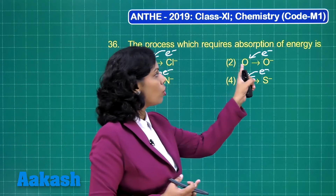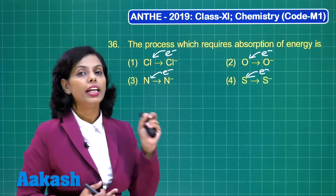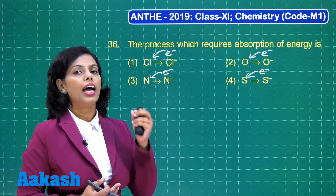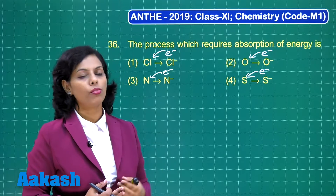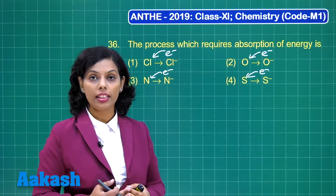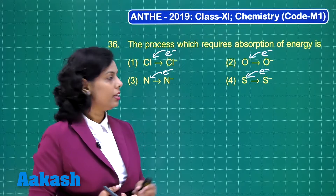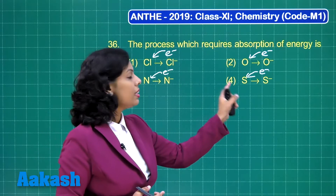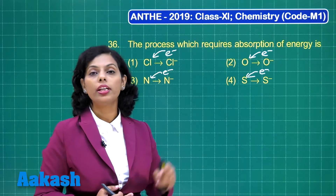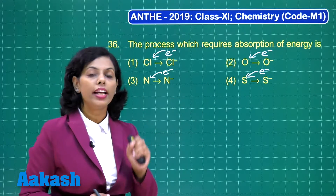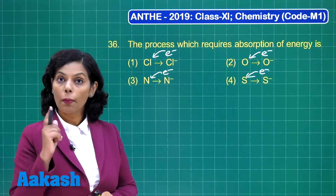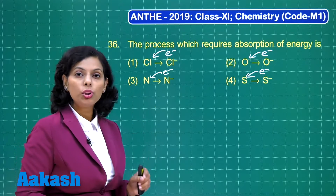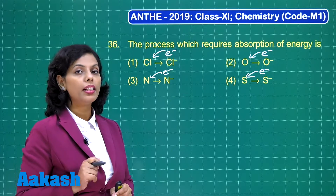The same thing happens for oxygen — electron is gained and energy is released, giving a negative electron gain enthalpy value. Similarly, in the case of sulfur, there is also a release of energy, not absorption, and it also has a negative electron gain enthalpy.